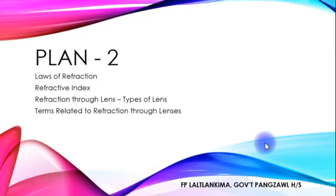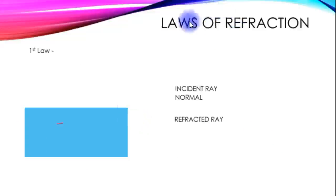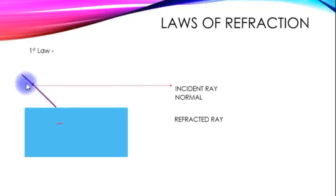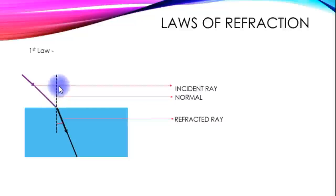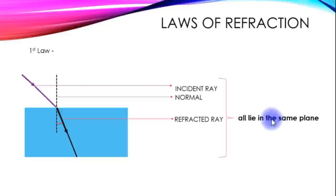These are the essential key parts: the incident ray and refracted ray, and the normal. These three rays — incident ray, normal, and refracted ray — are all lined in the same plane.